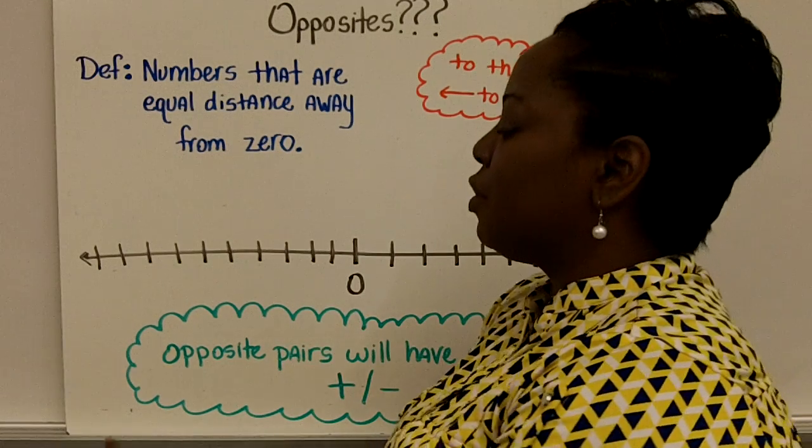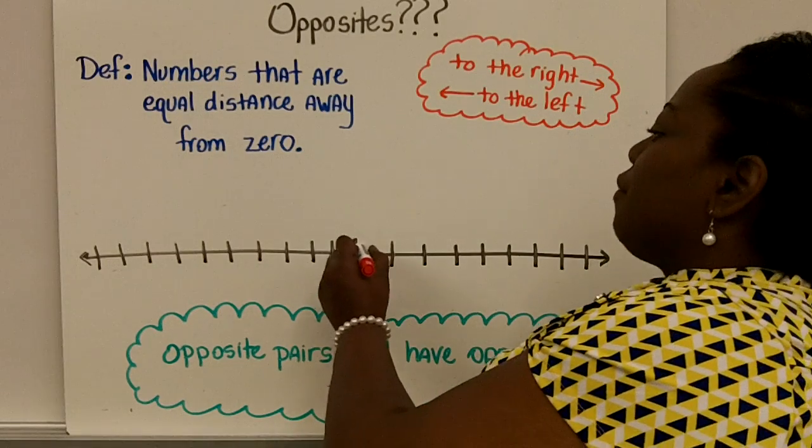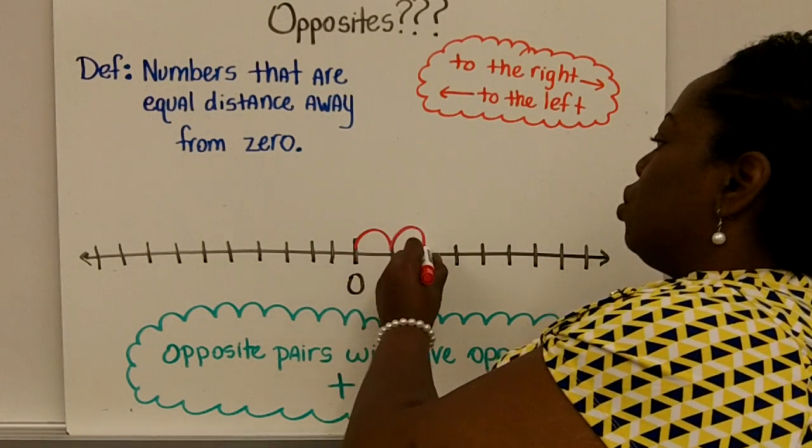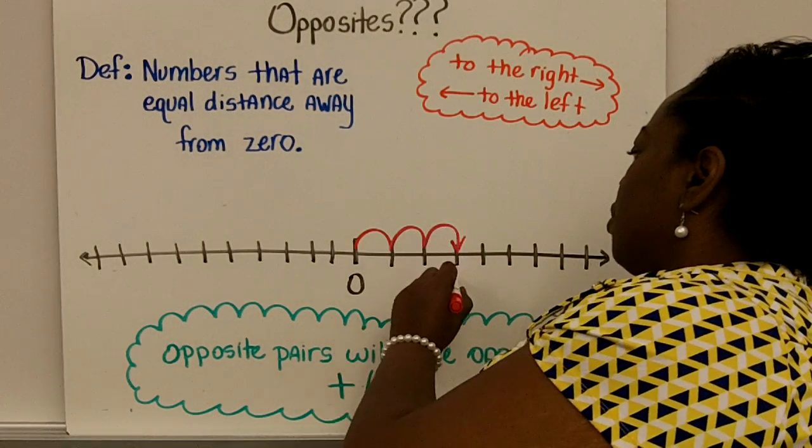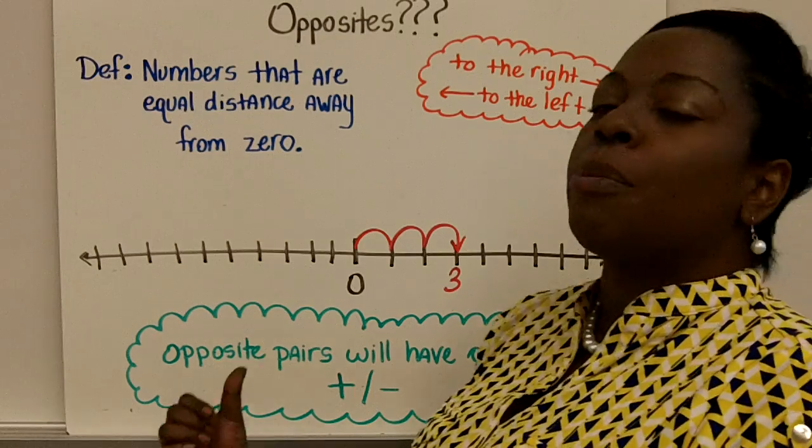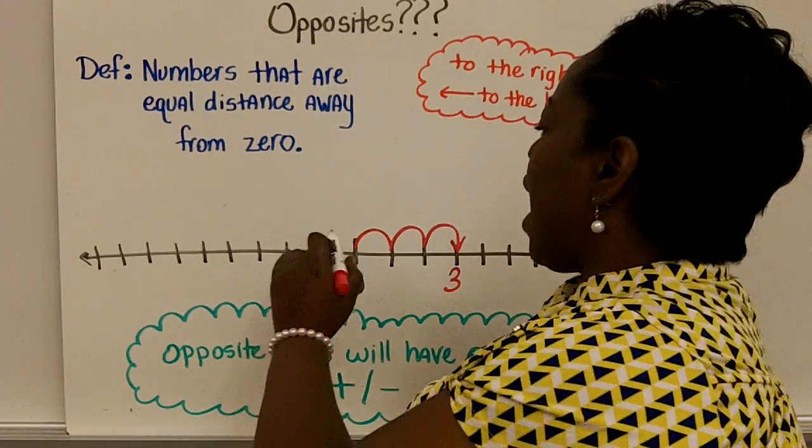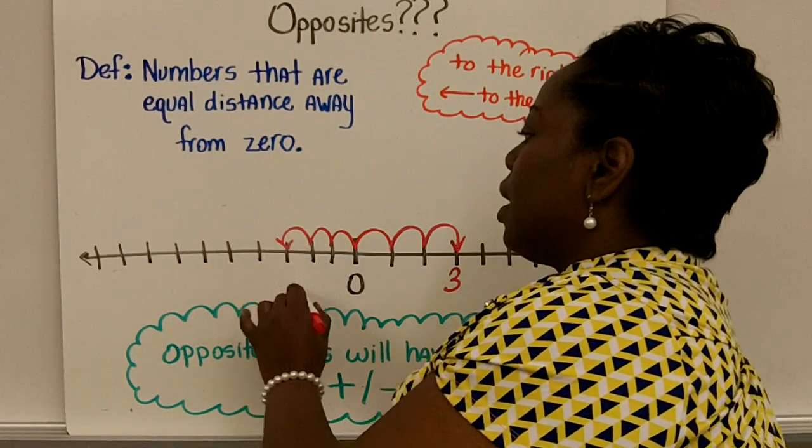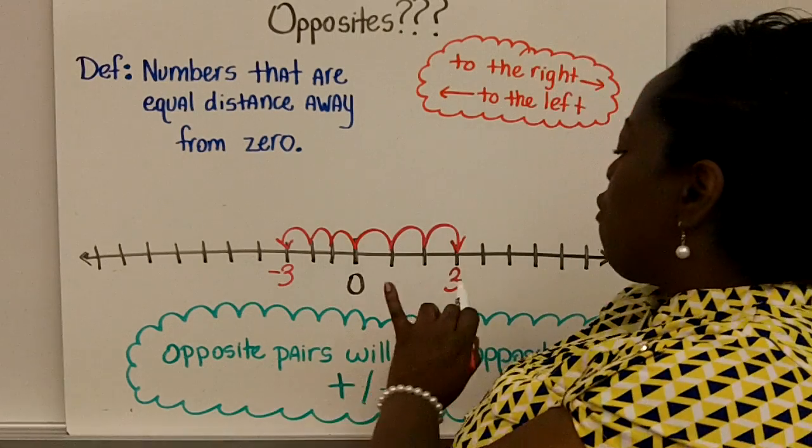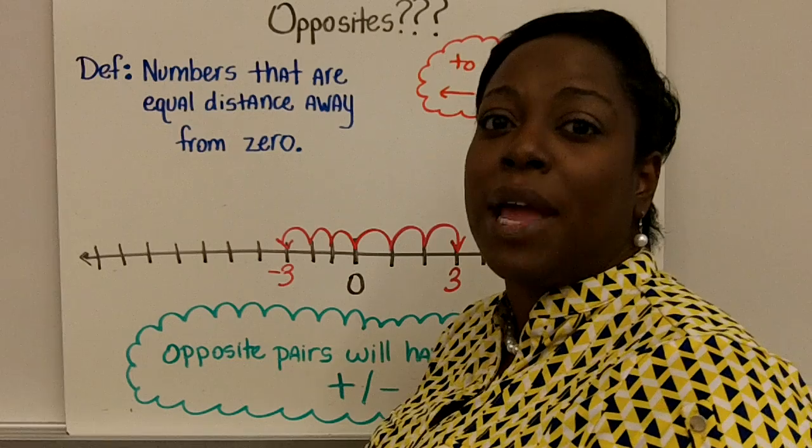So an example: if someone asked me what's the opposite of three, positive three. Well, I know that positive three is one, two, three places away from zero. So positive three lies three places to the right. So the opposite of positive three would have to go three places to the left, ending at negative three. Therefore, positive three and negative three will be an example of an opposite pair.